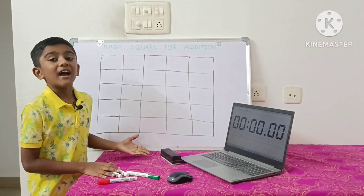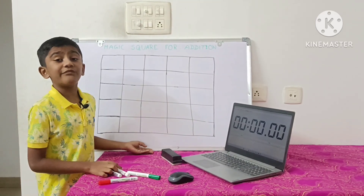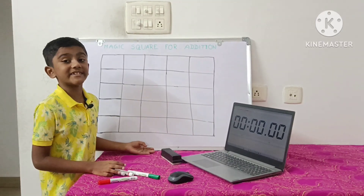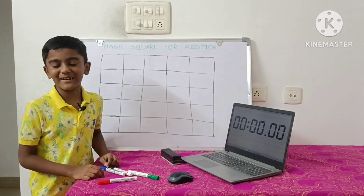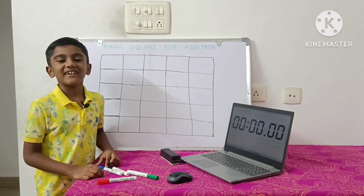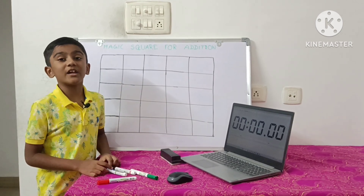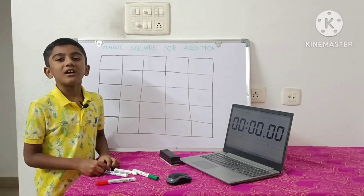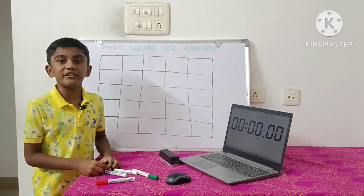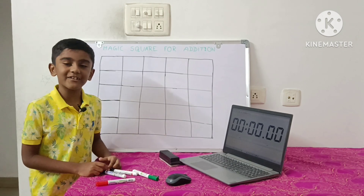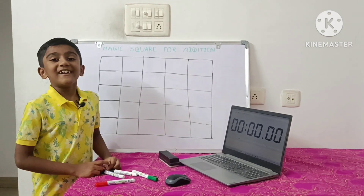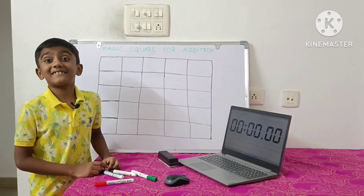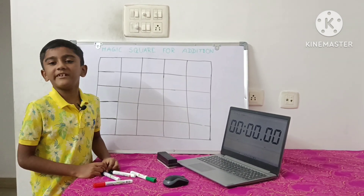Namaste! Today I am going to fill the magic square. Do you know what is a magic square? It is where you add horizontally, vertically, or diagonally and you will get the same number.